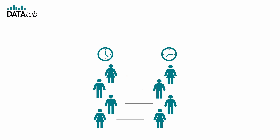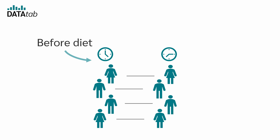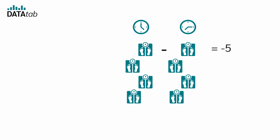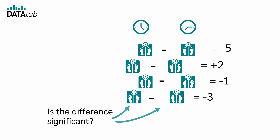Let's look at an example. We want to know how effective a diet is. To do this, we weigh 30 people before the diet and then weigh exactly the same people after the diet. Now we can look at the difference in weight before and after for each subject, and use a paired samples t-test to test whether there is a significant difference.